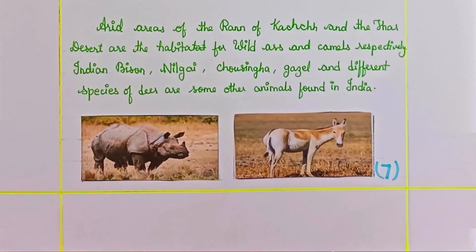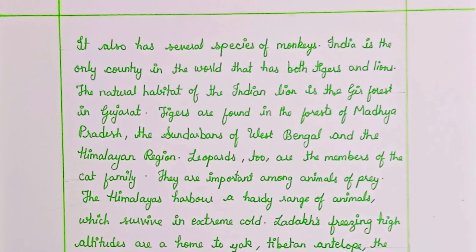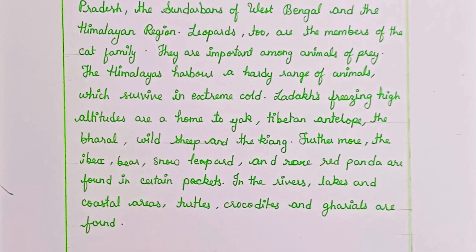Arid areas of Karnataka and the Thar Desert are the habitat for wild ass and camels respectively. Indian Bison, Nilgai, Chausingha, Gazelle, and different species of deer are some other animals found in India. It also has several species of monkeys. India is the only country in the world that has both tigers and lions. The natural habitat of the Indian lion is the Gir Forest in Gujarat. Tigers are found in the forests of Madhya Pradesh, the Sundarbans of West Bengal, and the Himalayan region. Leopards too are members of the cat family and are important animals of prey.